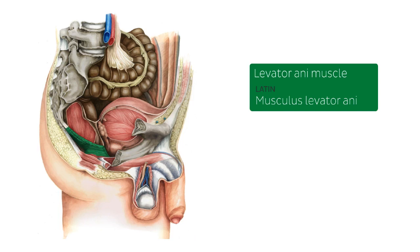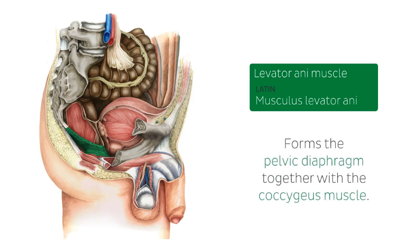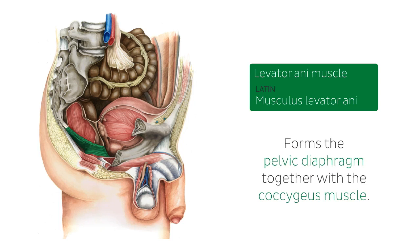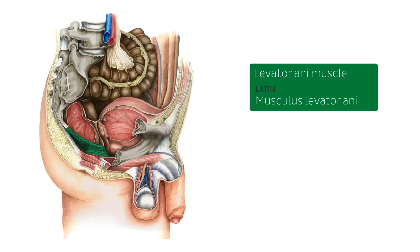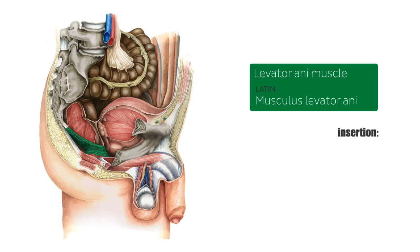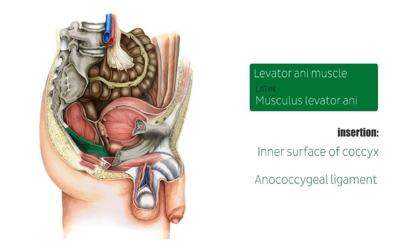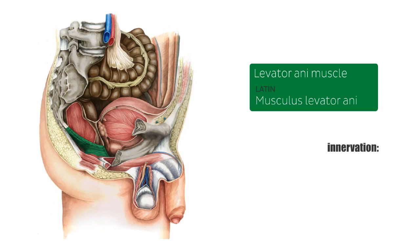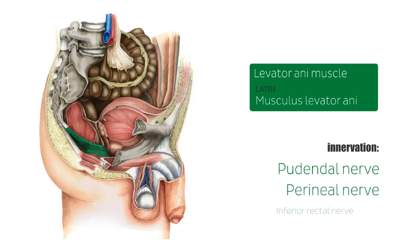The levator ani is a broad, thin muscle located on the side of the pelvis that forms the pelvic diaphragm together with the coccygeus muscle. It originates from the inner surface of the side of the lesser pelvis and inserts on the inner surface of the coccyx and the anococcygeal ligament. The levator ani is mostly innervated by the pudendal nerve, the perineal nerve, and the inferior rectal nerve.